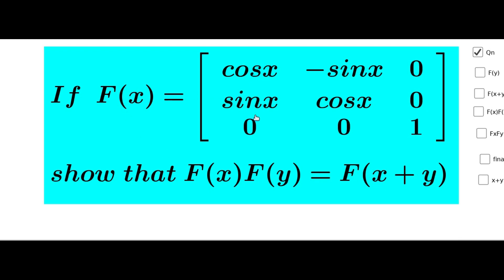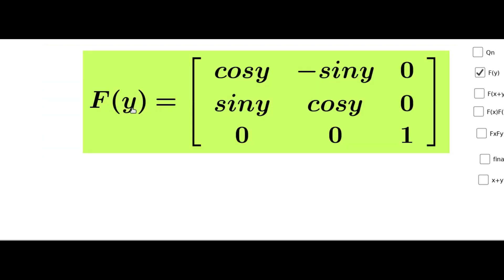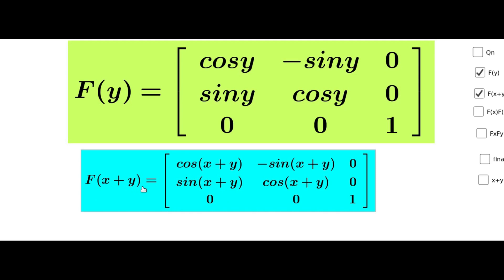For the given question, we have given f of x. First, we find f of y and f of x plus y. f of y equal to matrix [cos y, -sin y, 0; sin y, cos y, 0; 0, 0, 1]. f of x plus y equal to matrix [cos(x+y), -sin(x+y), 0; sin(x+y), cos(x+y), 0; 0, 0, 1].